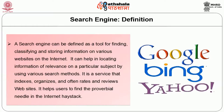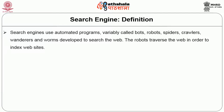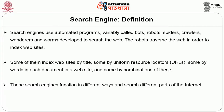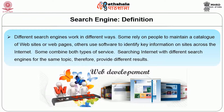Google, Yahoo, and Bing are examples of common search engines that index and search a significant part of the web. Search engines use automated programs variably called bots, robots, spiders, crawlers, wanderers, and worms developed to search the web. Robots traverse the web to index websites — some by title, some by URLs, some by words in each document, and some by a combination of all of these. Different search engines work in different ways and search different parts of the internet.